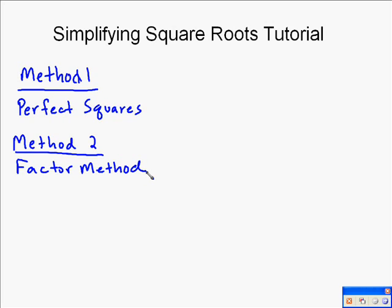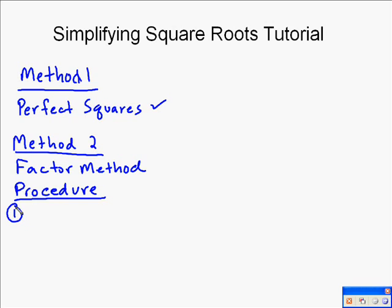To use these methods, we follow different procedures. We're going to go through the procedure of the factor method. We already have a video on perfect squares, so I'm going to use that to help develop the procedure for the factor method. The perfect square method factors out perfect squares, so I'll show an example and use it to build the factor method procedure.